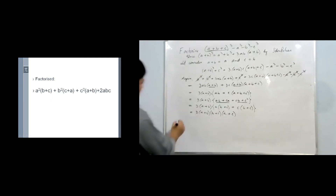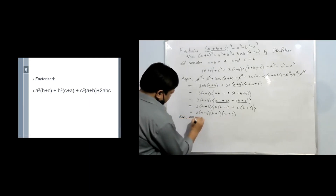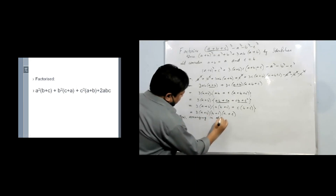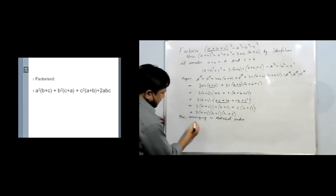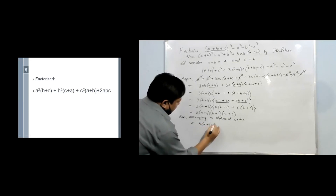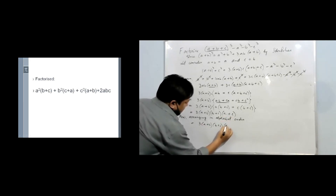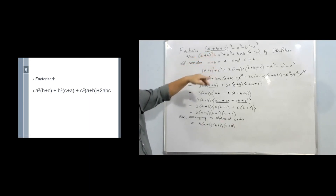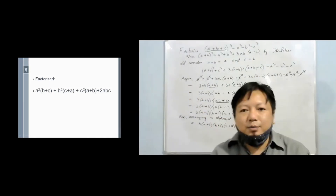Now let's rearrange in alphabet order. That is 3(a + b)(b + c), and since both are positive we can write it as (c + a). So the factor of (a + b + c)³ − a³ − b³ − c³ is 3(a + b)(b + c)(c + a).